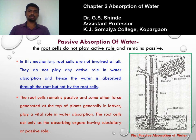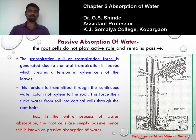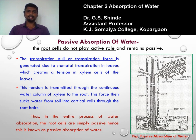That force is called the transpiration force or transpiration pull, which is responsible for the absorption of water. It creates a tension in the xylem cells of the leaves; this tension is transmitted through the continuous water column of the xylem to the root, which then sucks water from the soil into cortical cells through the root hairs. Thus, root cells remain passive — hence this is passive absorption of water, carried out without utilizing energy in the form of ATP.